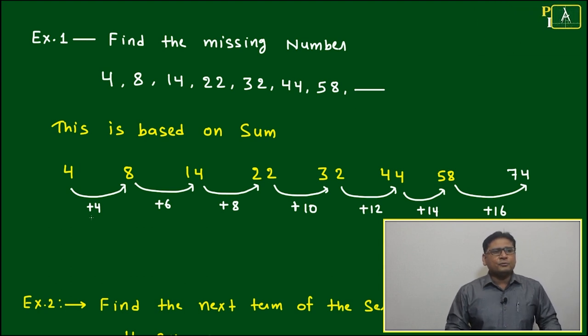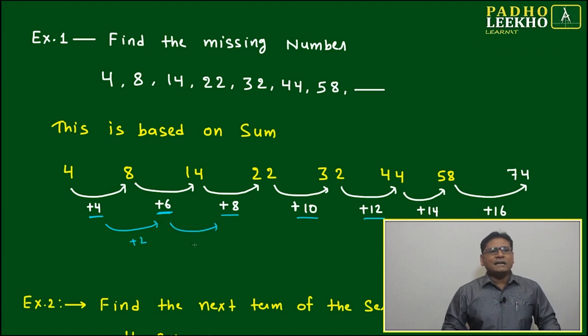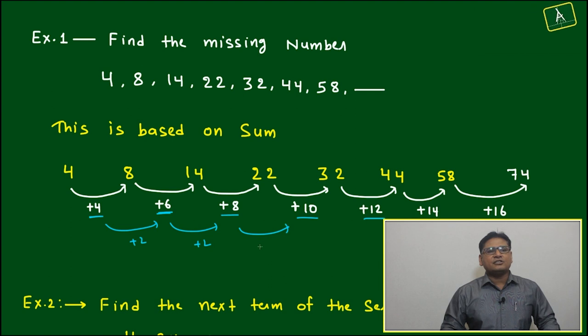4 to 8 is plus 4, 8 to 14 is plus 6, plus 8, plus 10, plus 12, plus 14, plus 16. These differences are following an arithmetic progression. All are increasing by the same number, which is called the common difference.